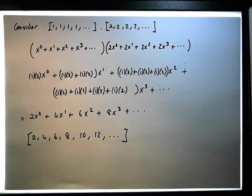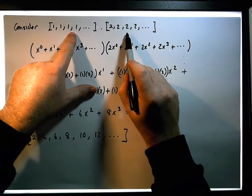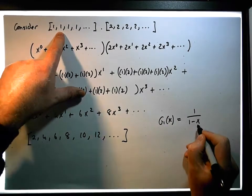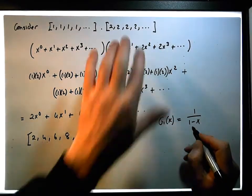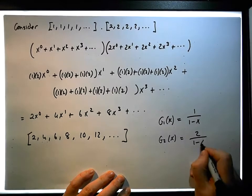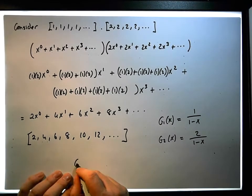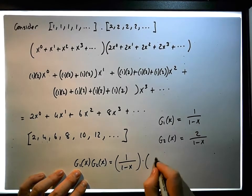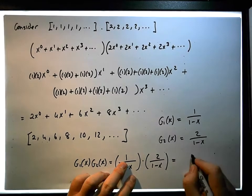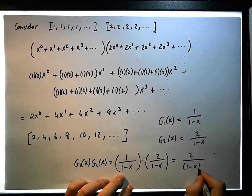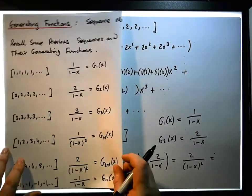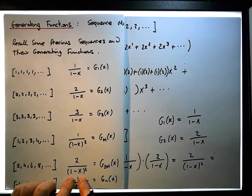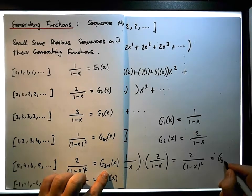So what is its generating function? Its generating function must be the product of the two generating functions. g₁(x) for the constant sequence of ones is simply 1 over 1 minus x. For the constant sequence of twos, g₂(x) is simply 2 times 1 over 1 minus x. Their product g₁(x) times g₂(x) equals 1 over (1−x) times 2 over (1−x), which gives us 2 over (1−x)², the generating function of twice the natural numbers.